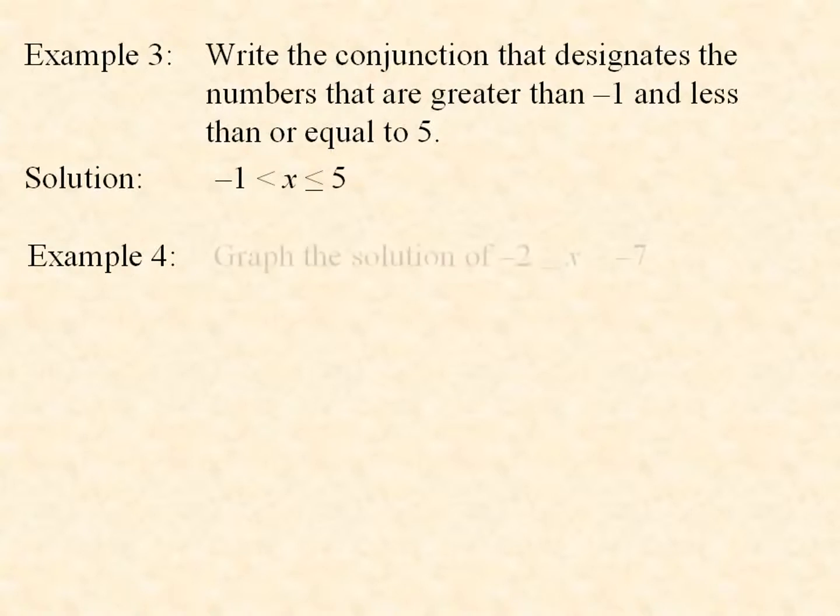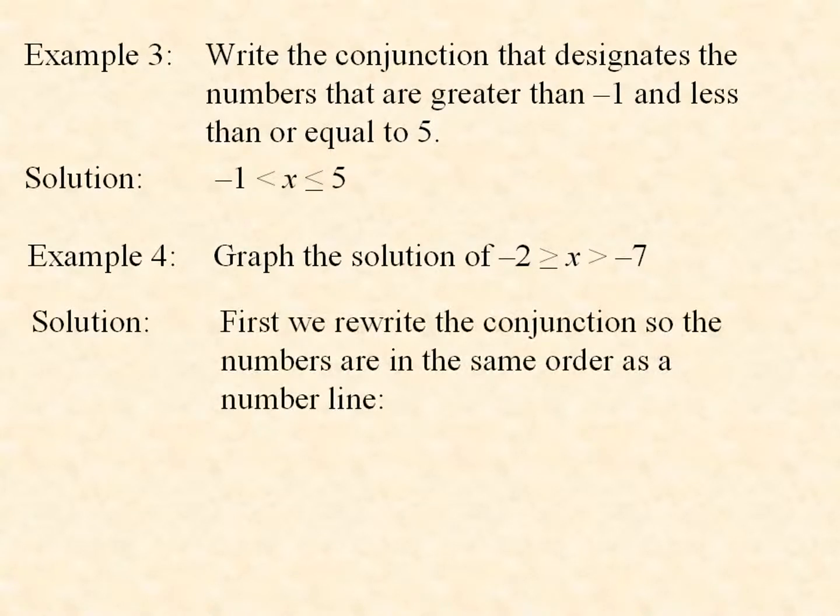Example 4. Graph the solution of -2 ≥ x > -7. It looks a little strange. The inequalities are pointing the other way. First, we rewrite the conjunction so the numbers are in the same order as the number line.